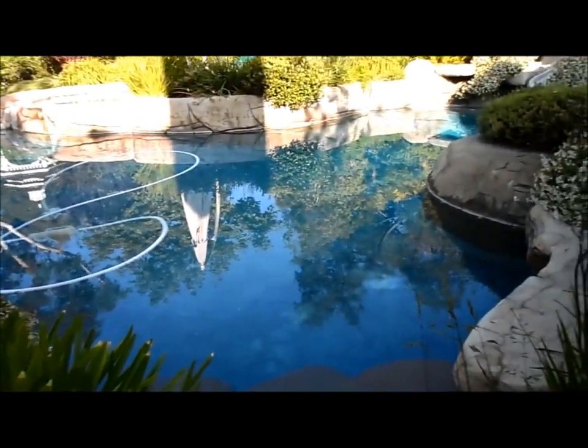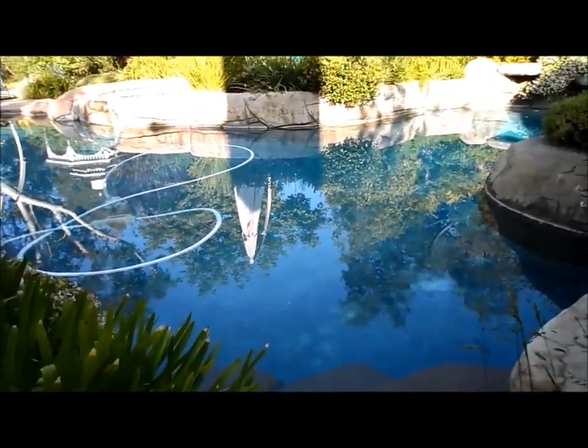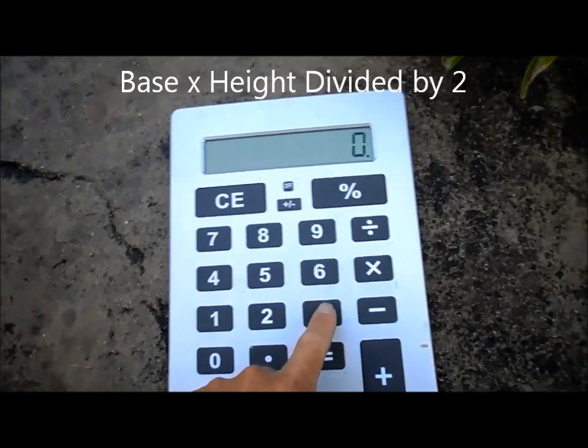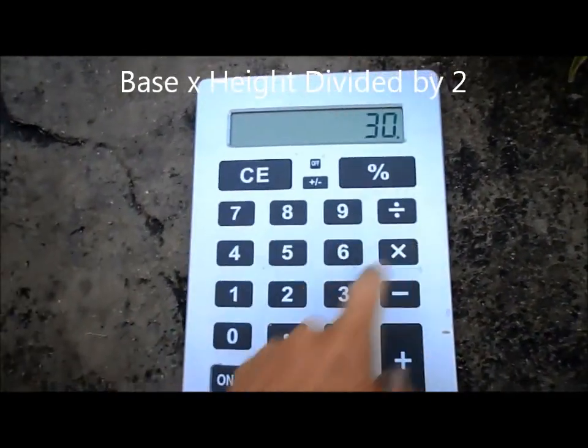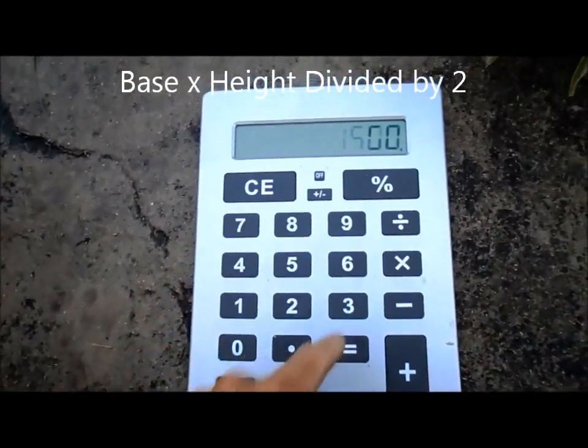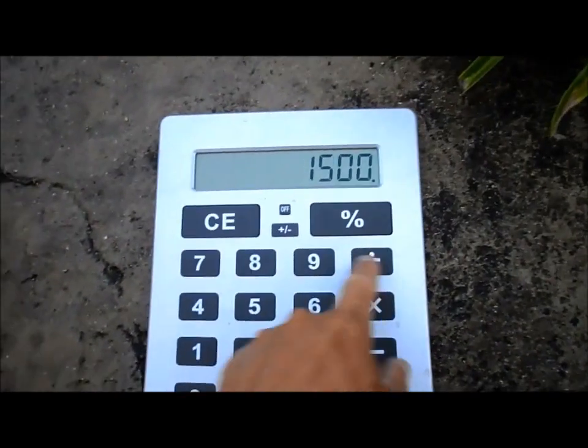Okay, from this point it's really not round or rectangular—it's more like a triangle. So this is a triangle calculation I'm going to use for this pool. So the base was 30 feet and the length was 50. That gives me 1,500. I'm going to divide that by 2.